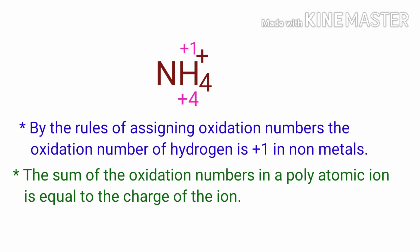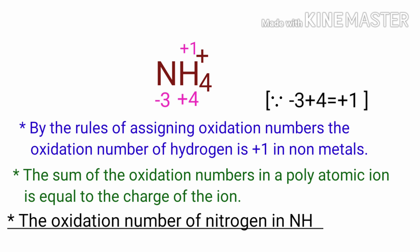As per rule, the sum of oxidation numbers in a polyatomic ion is equal to the charge of the ion. So the number under N must be minus 3. Therefore the oxidation number of nitrogen in ammonium ion is minus 3.